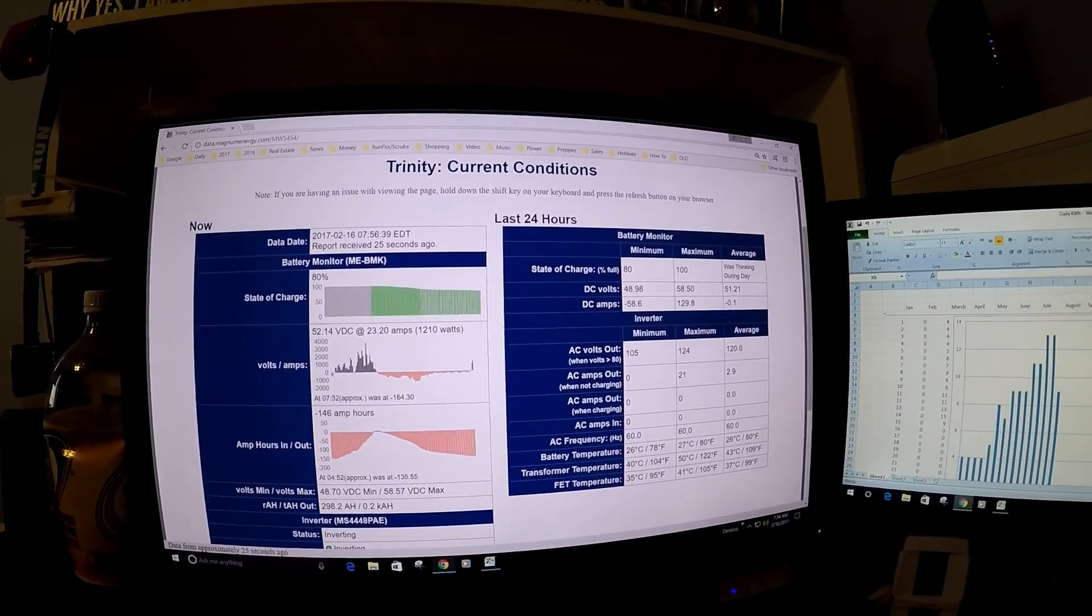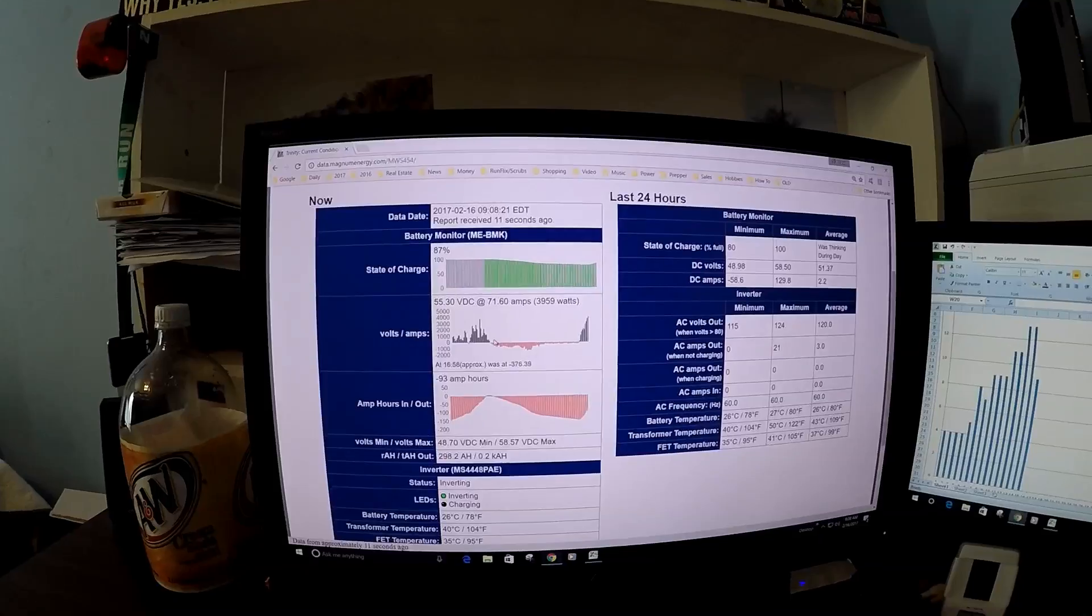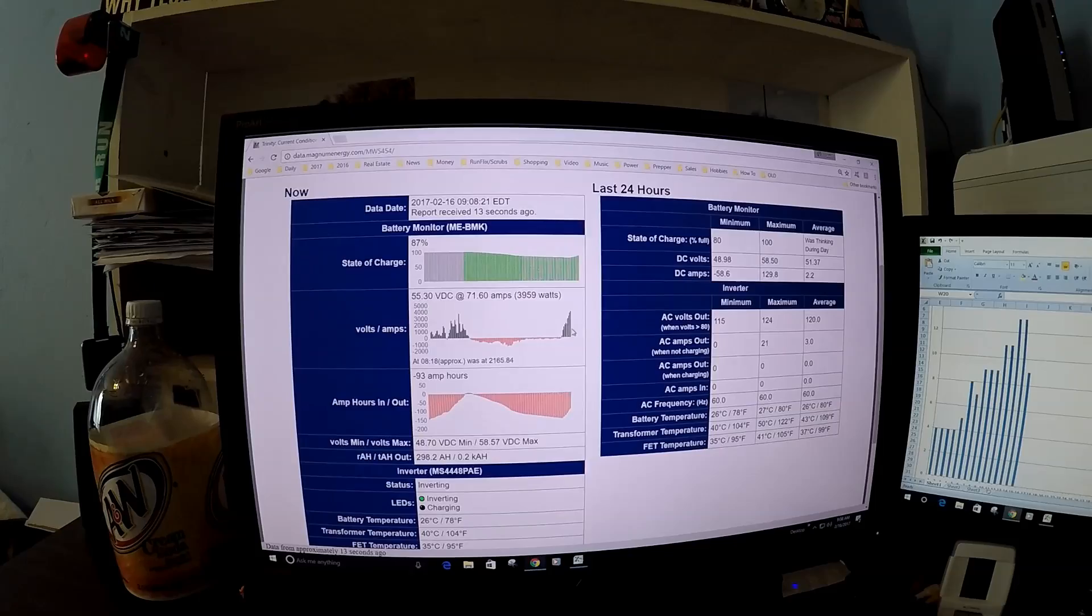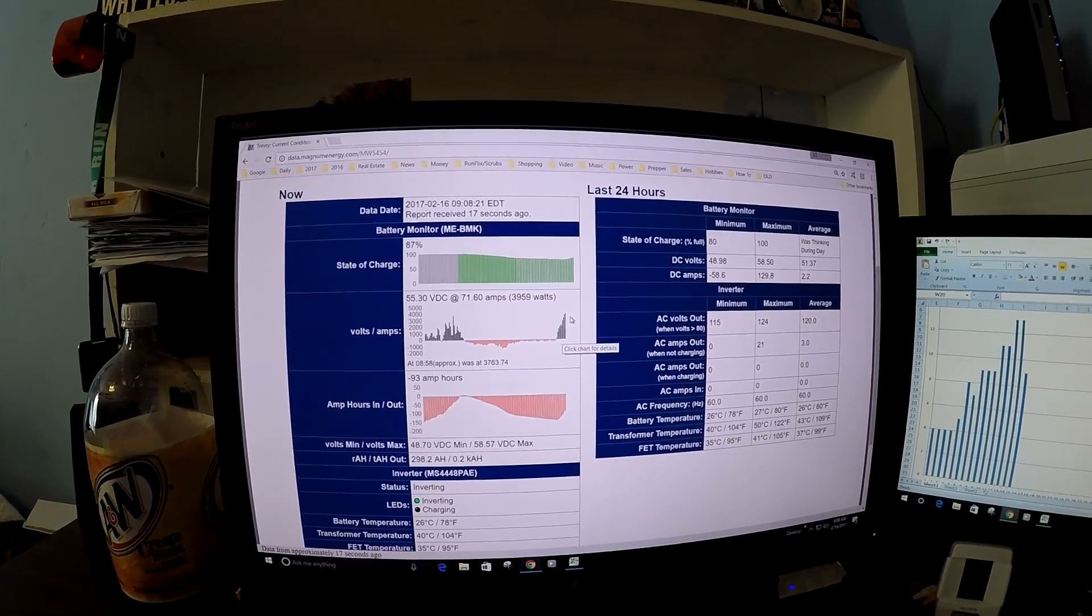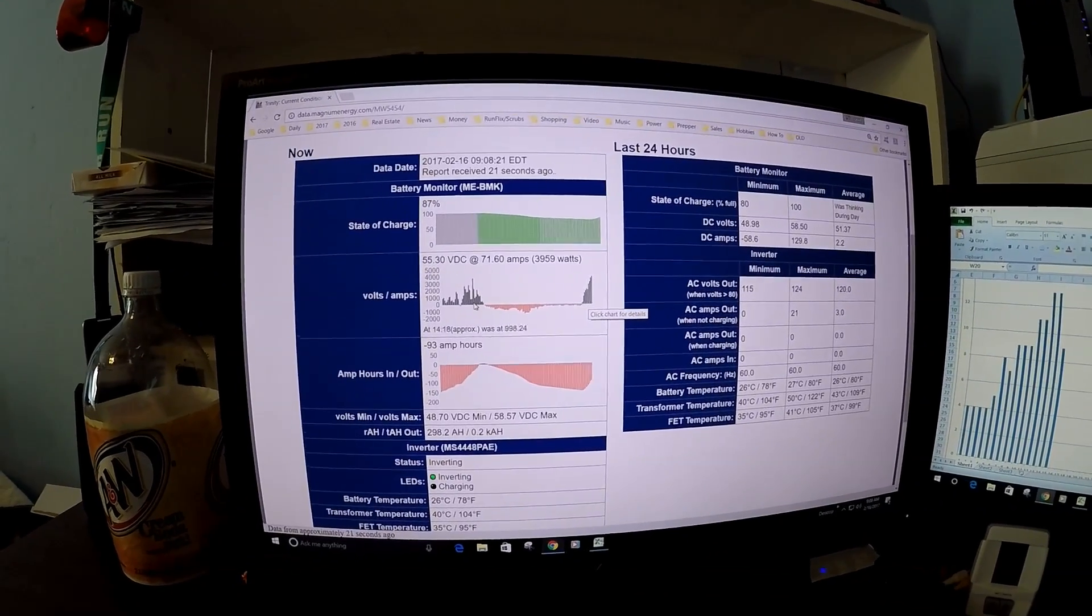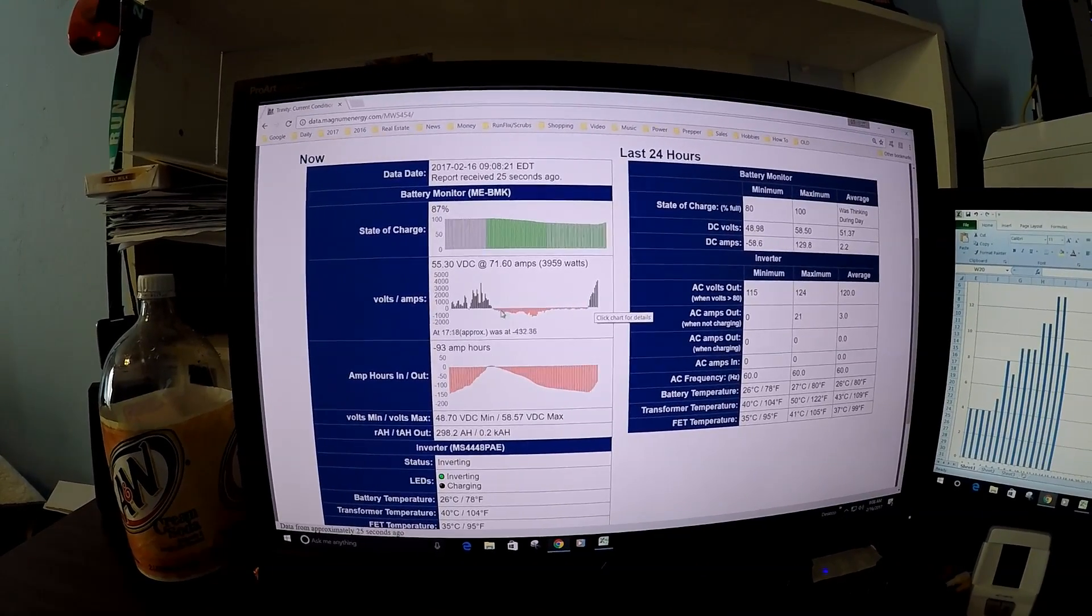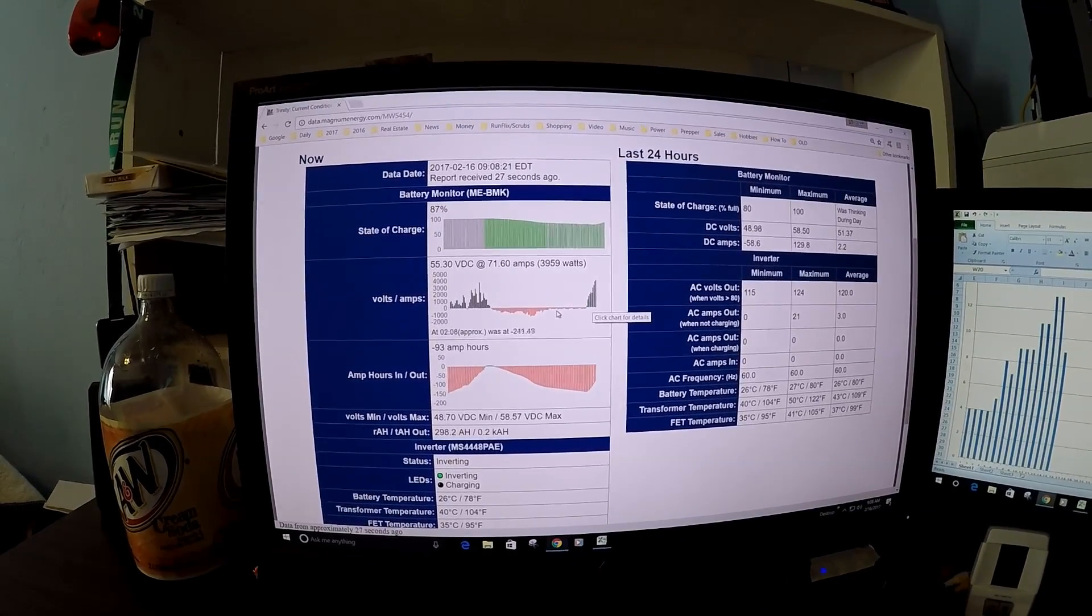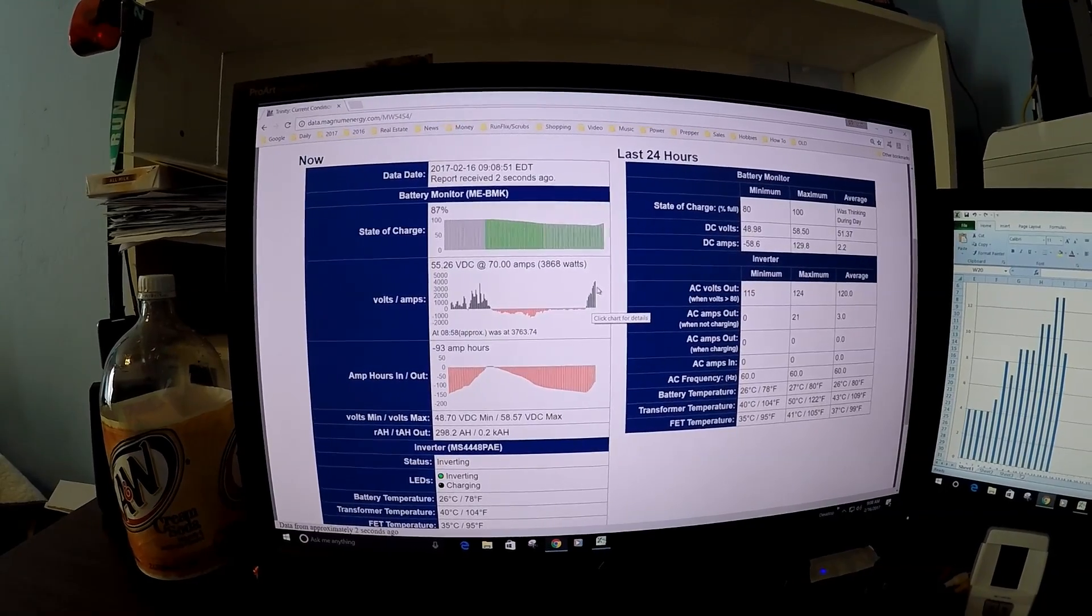This is the MagWeb data. 4,000 watts coming in off the panel. It's gone up pretty quick. Yesterday was cloudy and rainy. Didn't rain too much, but it was cloudy. And then the sun went down and we went negative. And now we're just cranking lots of power coming in.